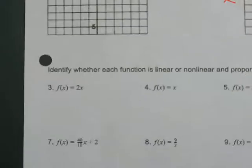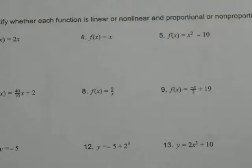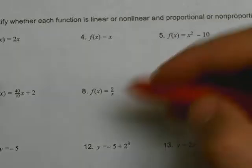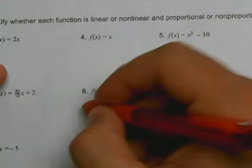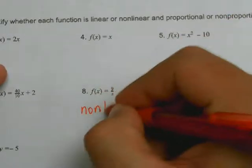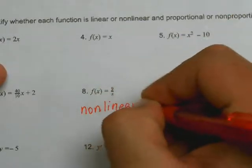Let's pick some down here to look at. Let's go with number 8. So the question you got to ask yourself: does x have an exponent greater than one, or is x in the denominator? Right here x is in the denominator, so it's automatically non-linear. And if it's non-linear, it's neither proportional or non-proportional.